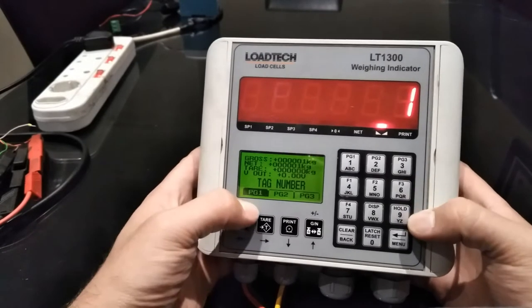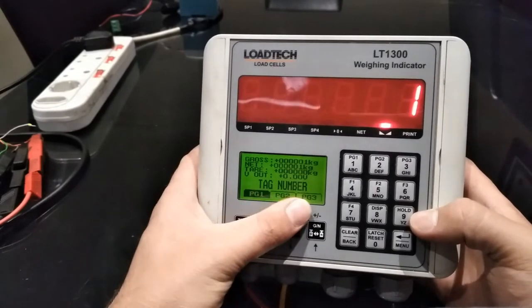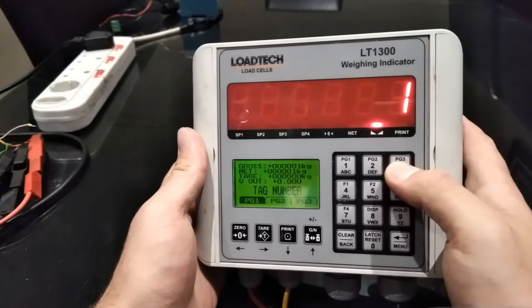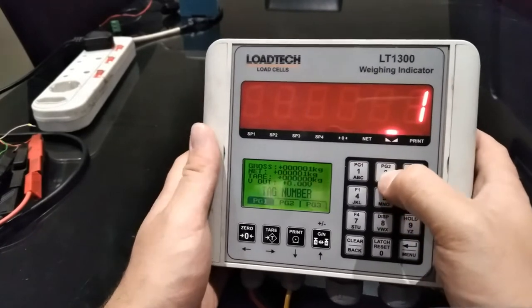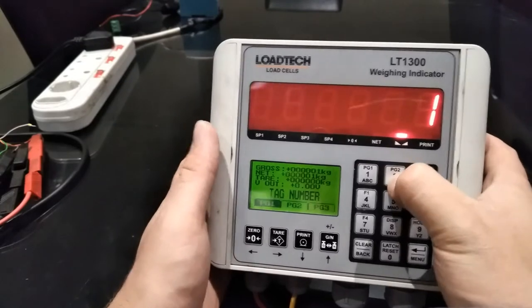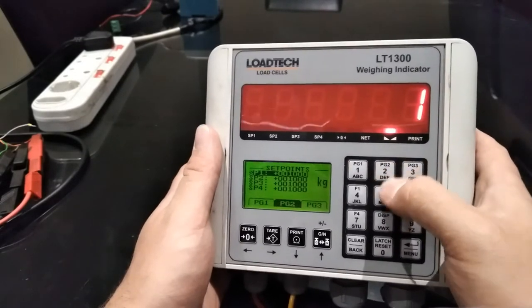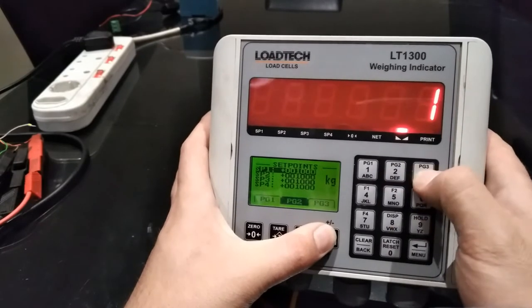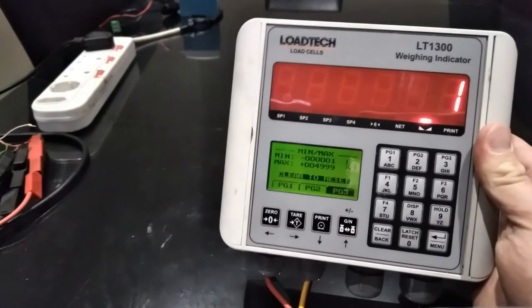Before we start I want to show you pages 1, 2 and 3. You can access these pages by using the page buttons. Page 1 is your normal weight values. Page 2 is your set points. This is where you will change your set points for your alarm. Page 3 is your minimum and maximum values.